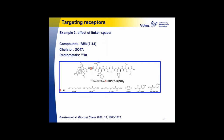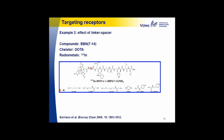The third example is not as profound as the other two. They looked at a bombesin analog and labeled it with indium, attaching DOTA via different linkers — aliphatic chains and aromatic linkers. What they saw was that one day post-injection, the groups with the aromatic linkers showed better tumor retention. The effect was much smaller compared to the other two examples, but you can play around with linkers to achieve as high as possible a tumor-to-background ratio.